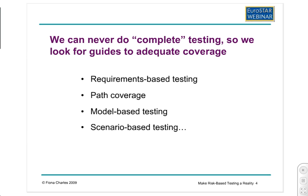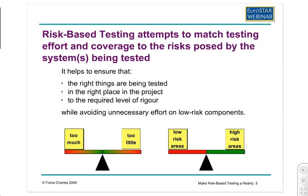We all know that complete testing is an illusion. We can't do complete testing. So we try to find ways that we can get adequate coverage. Risk-based testing is a way that many of us introduce, and we do that as a way of finding out what really matters in the system and matching what we do in our testing — both from an effort point of view and from a coverage point of view — to what's really there. Because we want to make sure that we're testing the right things at the right time and to the right level of rigor, but we don't want to waste our time with unnecessary effort on the low-risk components.